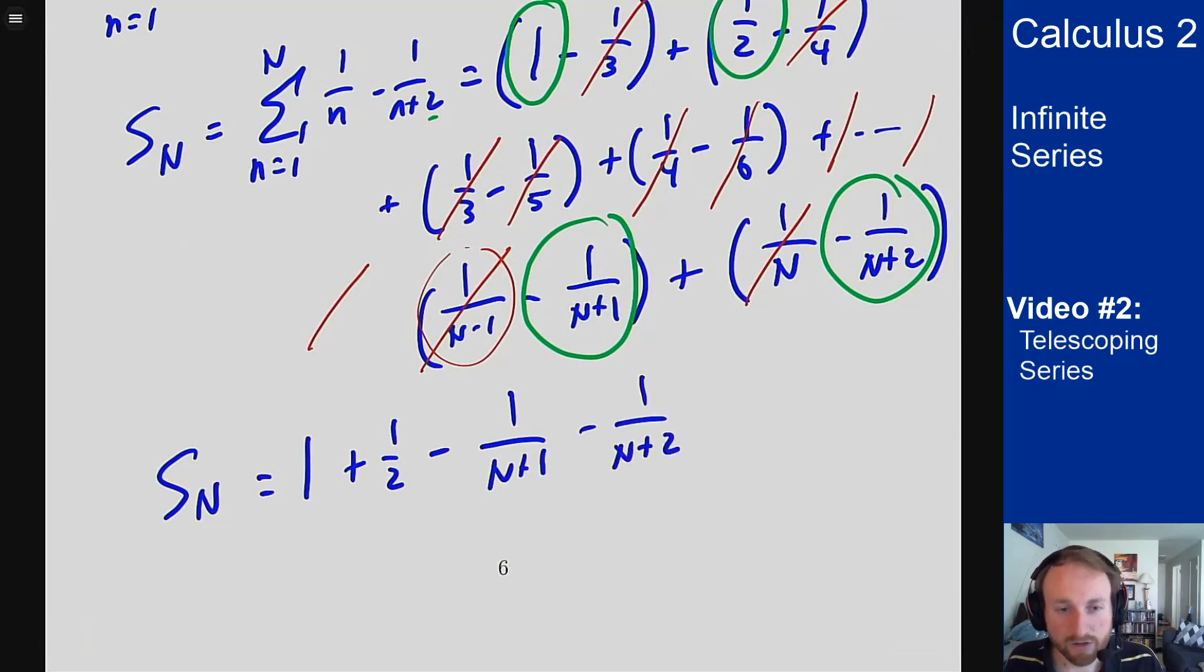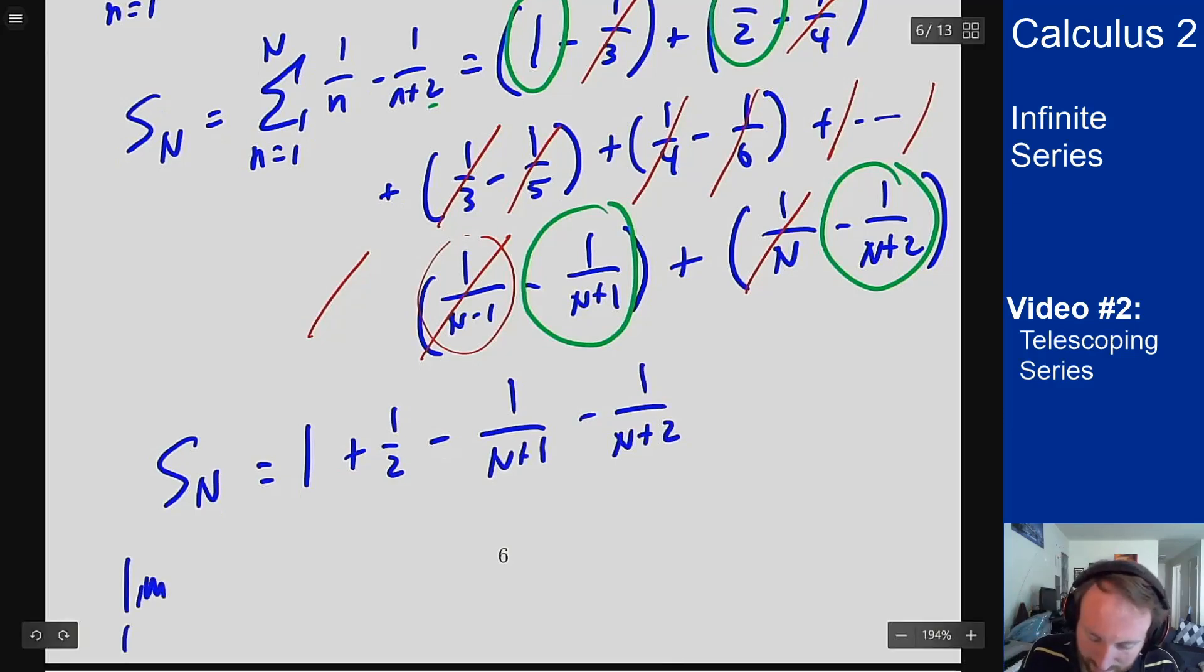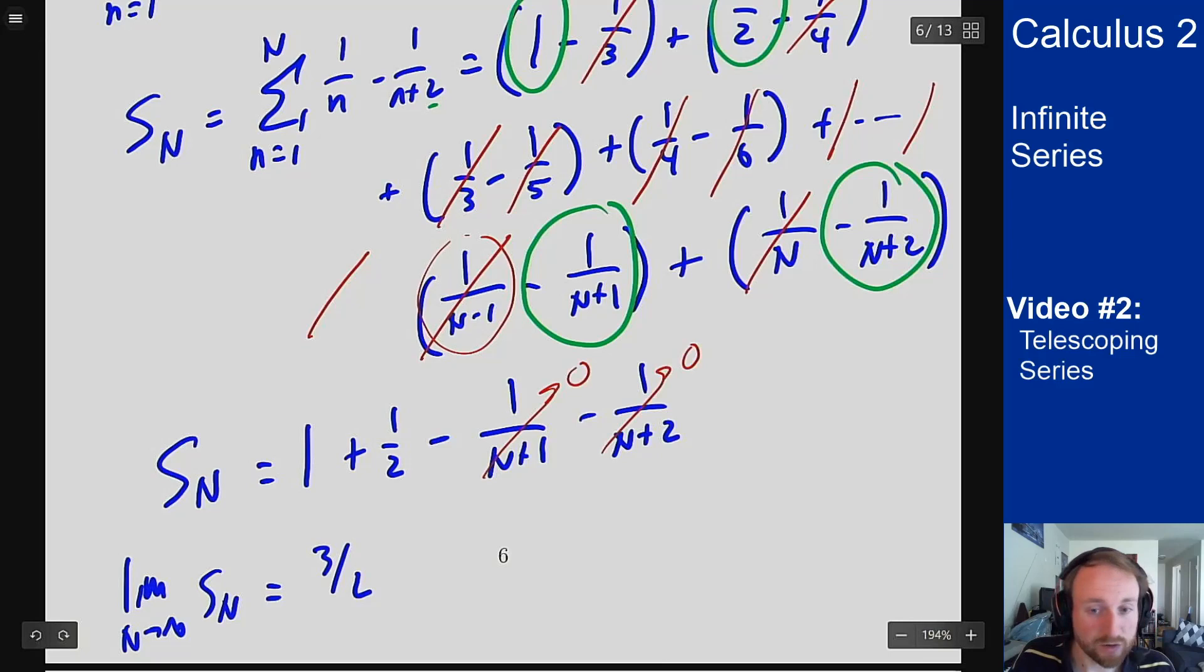And so then does this series converge? The question then asks, does this limit exist? Limit as N goes to infinity of S sub N is just three-halves because both of these will go to zero as N goes to infinity. So my limit is three-halves. This means the series converges and it converges to three-halves.